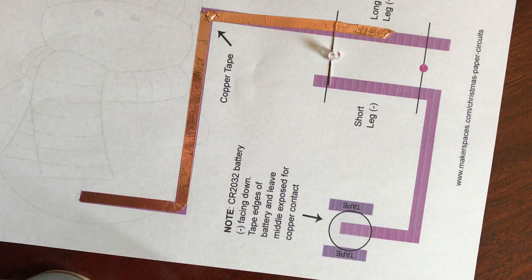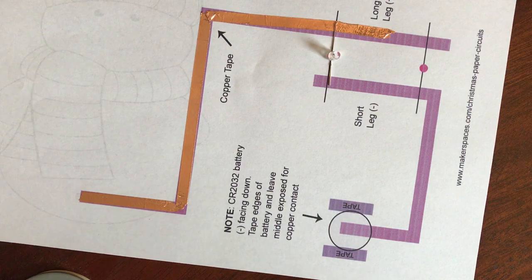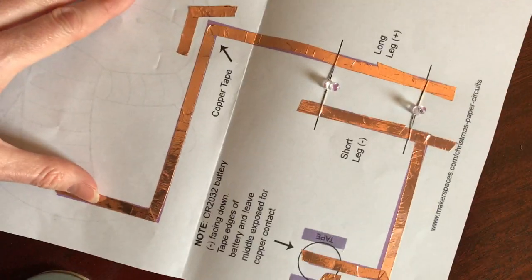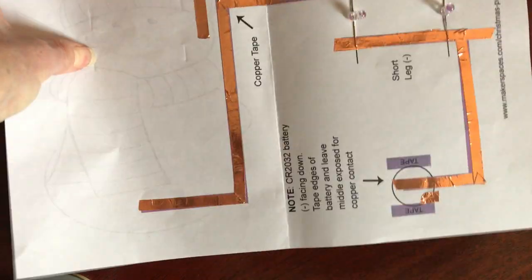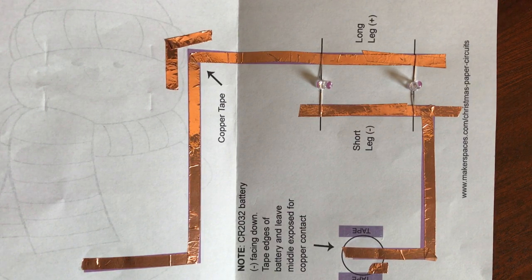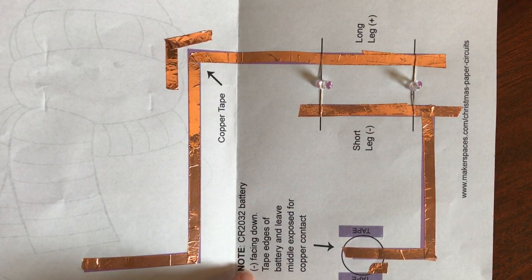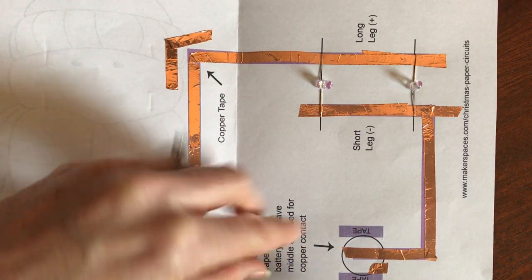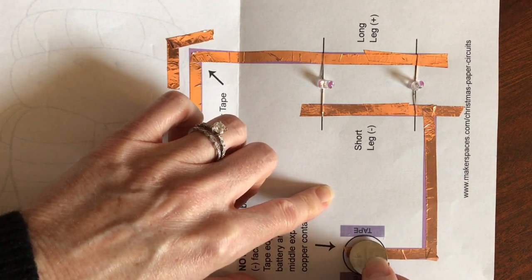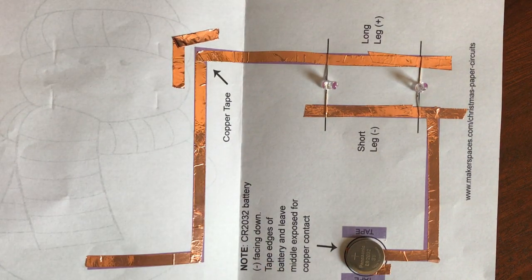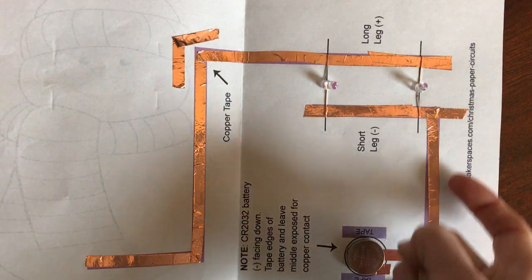And then after you have your copper tape all the way around and your LEDs have been taped down, then you can take your battery and you can test your card out. And you'll see there are some directions. It says negative facing down. So there's my negative down. There's my positive. So my tape runs up through the circle. I'm going to set my battery on top of my tape. And now nothing is going to happen yet because I only have the negative side connected.